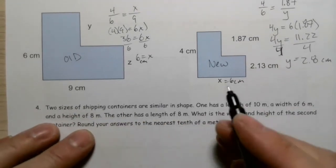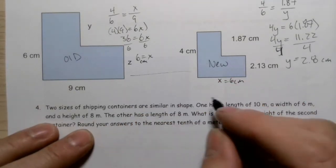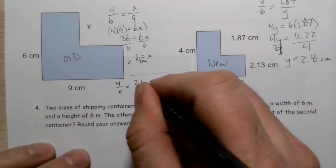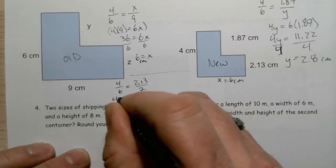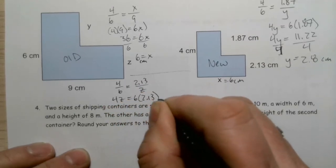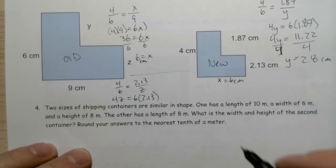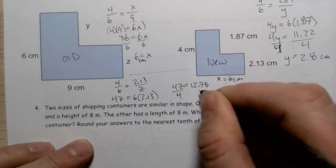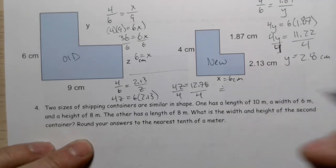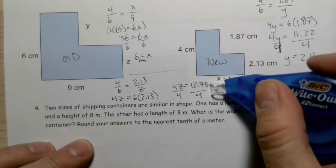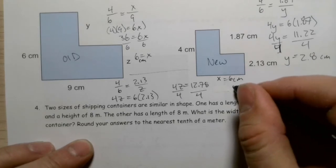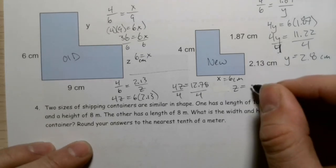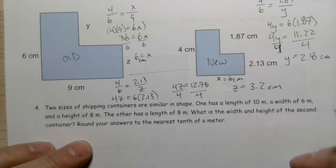Finally, to get z: 4 over 6 equals 2.13 over z. Cross multiplying: 4z equals 6 times 2.13, so 4z equals 12.78. Dividing both sides by 4: z equals 12.78 divided by 4, which is approximately 3.2 centimeters.